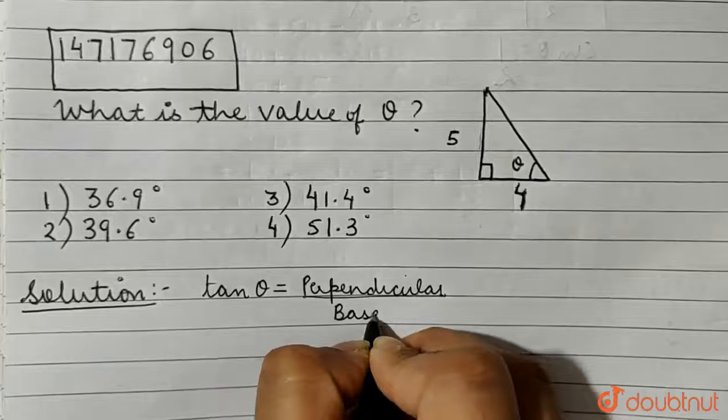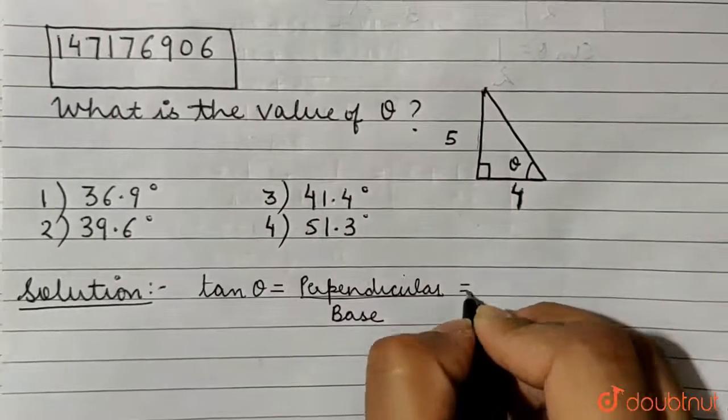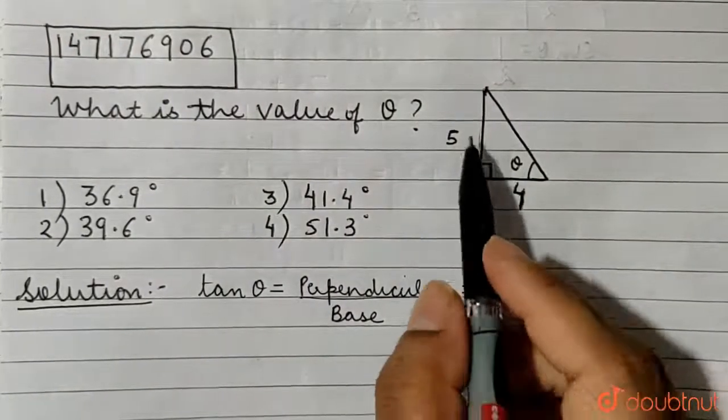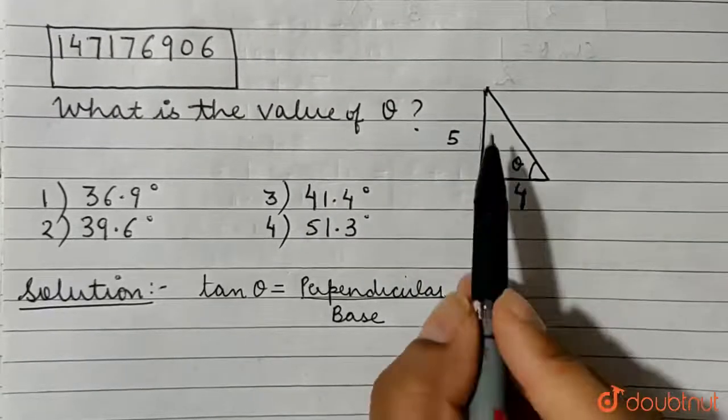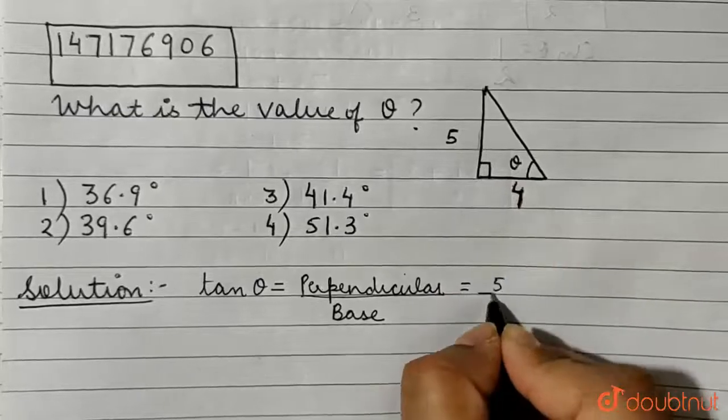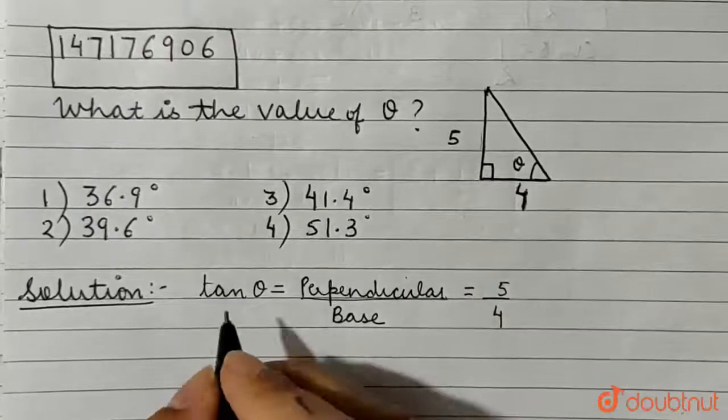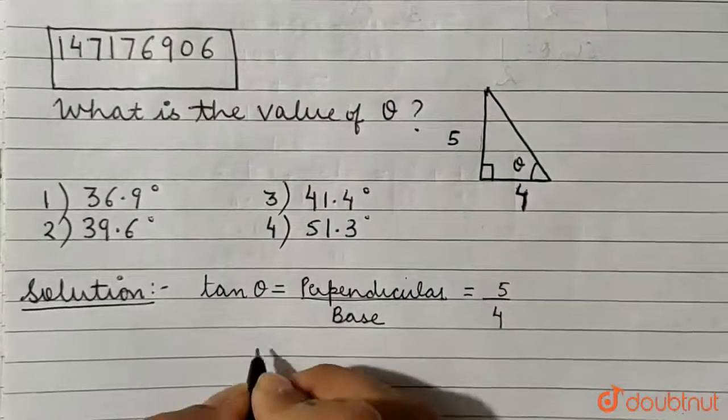This is the formula to calculate the tangent of an angle. Here, in our question, the perpendicular is 5. Perpendicular is the side opposite to the angle theta, and the base is 4. Therefore, we have tan theta equals 5 by 4.